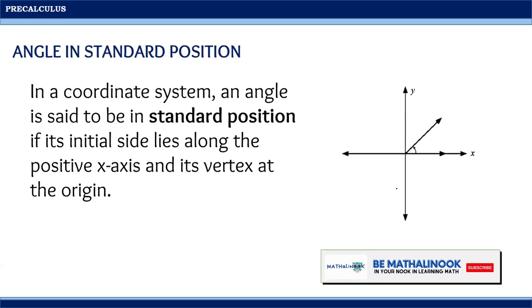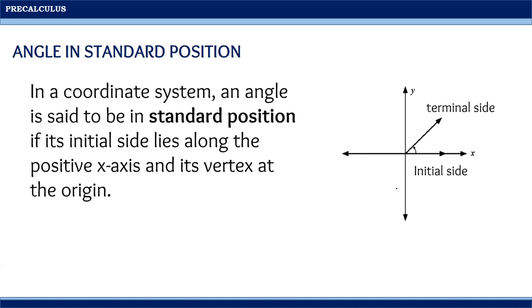In a coordinate system, an angle is said to be in standard position if its initial side lies along the positive x-axis and its vertex is at the origin.